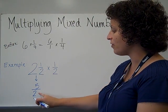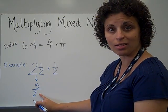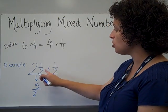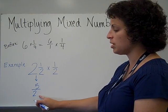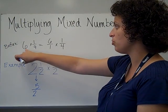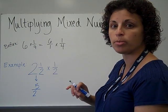So 2 and 1 half is the same as 5 halves, or 5 over 2. I've turned this mixed number into an improper fraction, just like before we turned this whole number into an improper fraction.